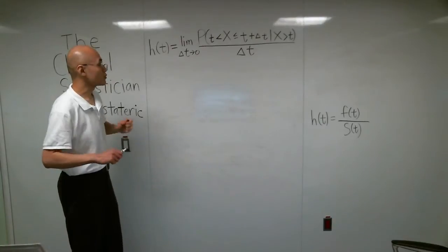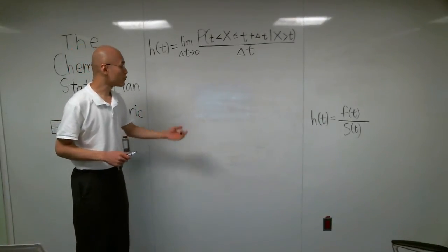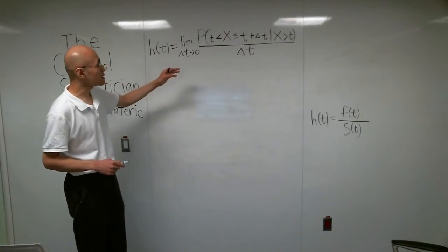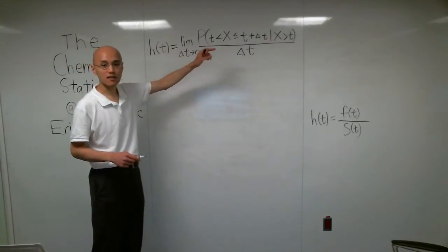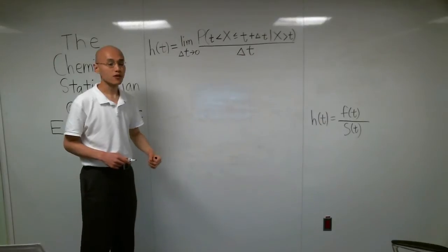Let's start with that numerator. That is a conditional probability, so we can rewrite that, and by definition, it is equal to the probability of the intersection between the first and the second events divided by the probability of that second event. So let's do that.